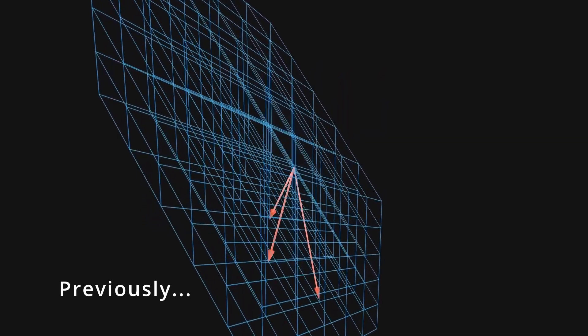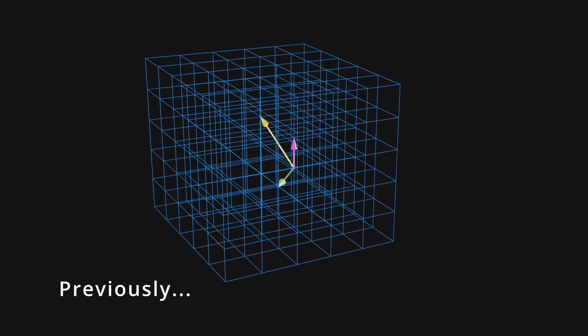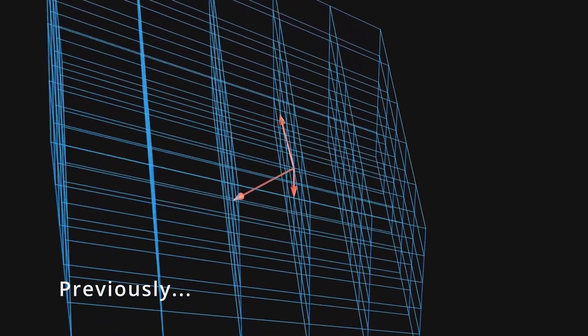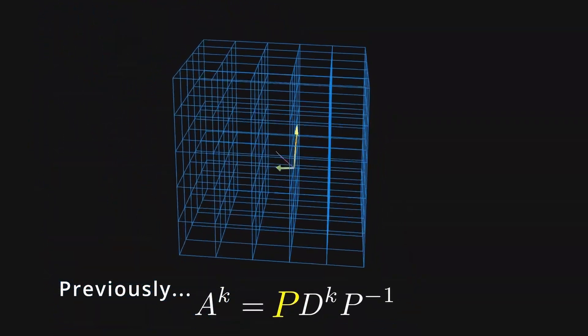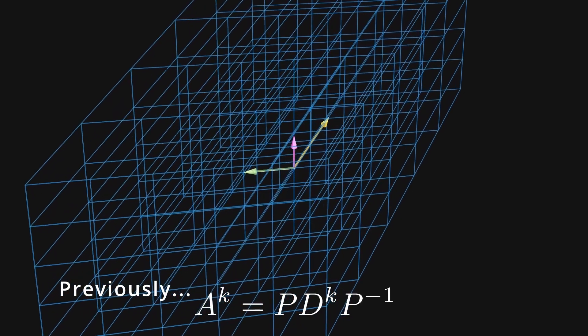We argued that the best set of vectors were the direction invariant ones, the ones that were only scaled by the transformation. But what if there doesn't exist any such vectors? This video is all about understanding why some matrices are not diagonalizable.